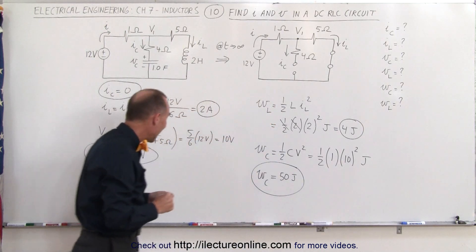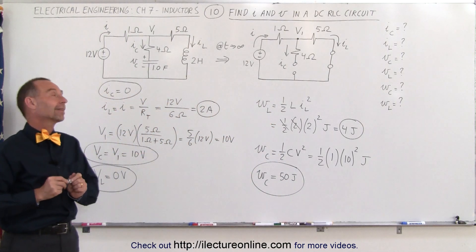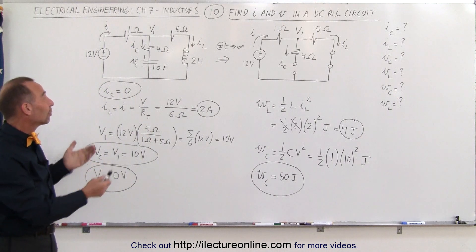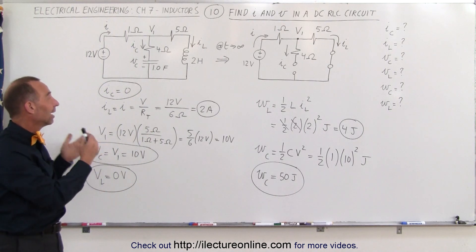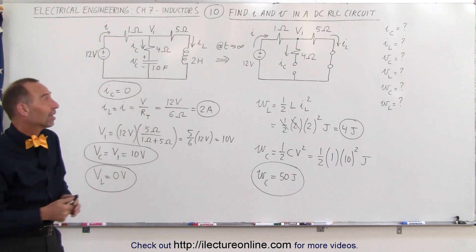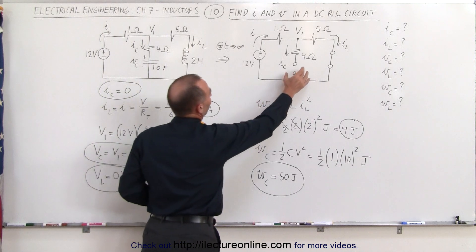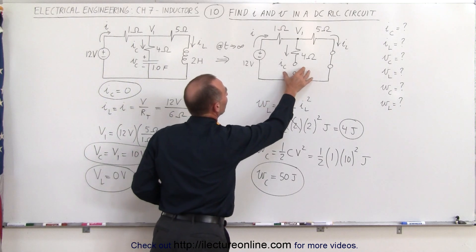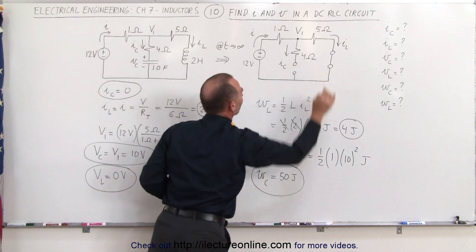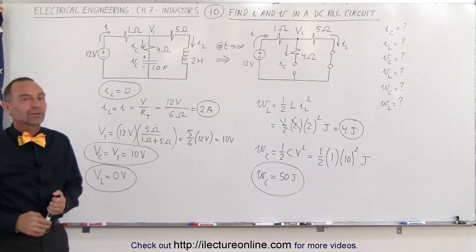And that's how we analyze a DC circuit that has both a capacitor and an inductor. Notice that at steady state, a capacitor acts like an open, and an inductor acts like a closed circuit. That's the key to solving a problem like that.